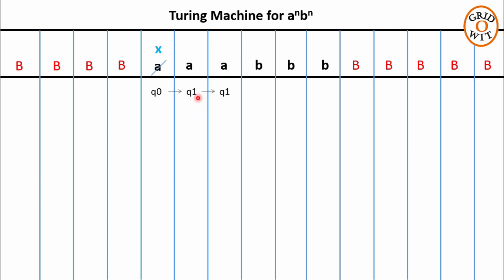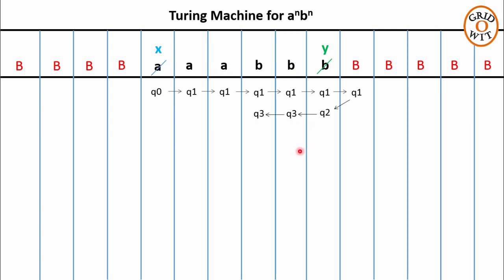On reading a, q0 will replace it with x, take a right move, and change its state to q1. The responsibility of q1 is to skip all a's and b's in between to reach the rightmost symbol. So q1 moves towards the right, and as soon as q1 reaches the blank symbol, q1 becomes aware that it has gone one step too far. So it takes a left move and changes its state to q2.